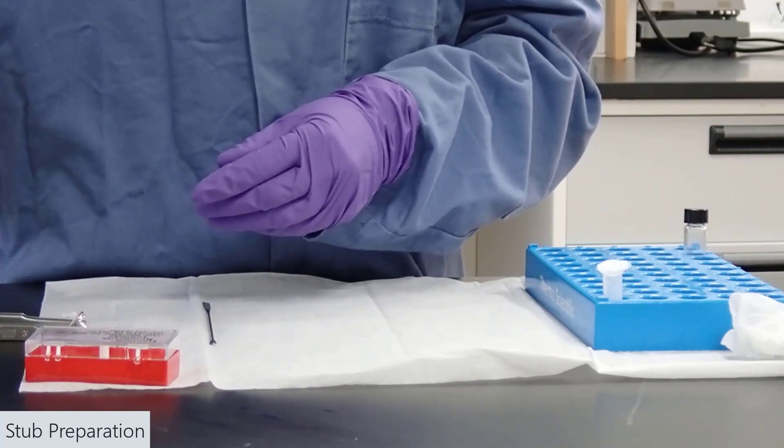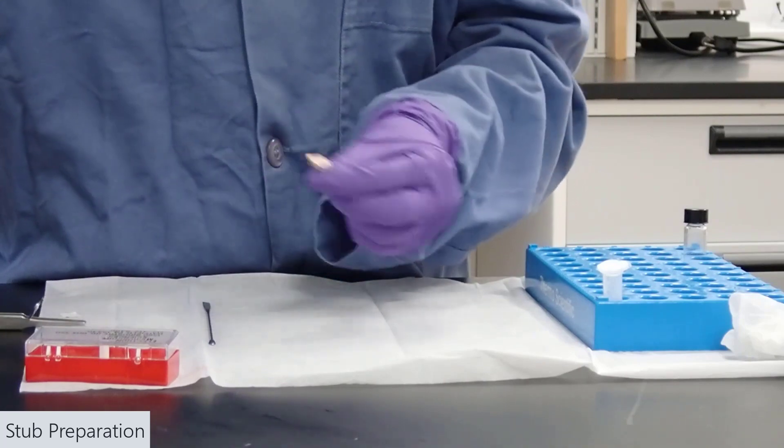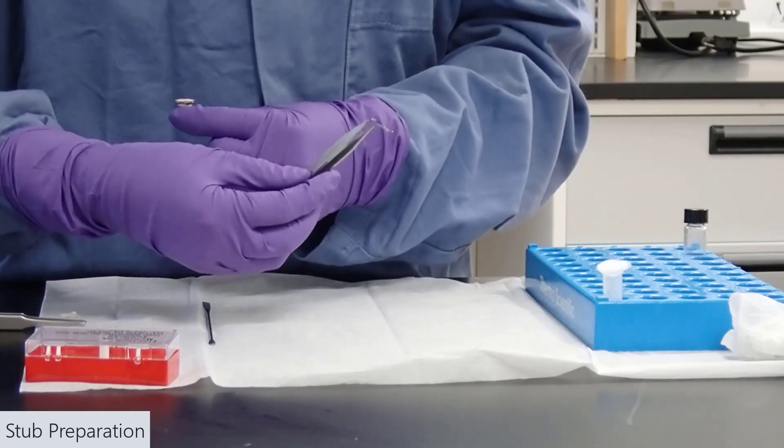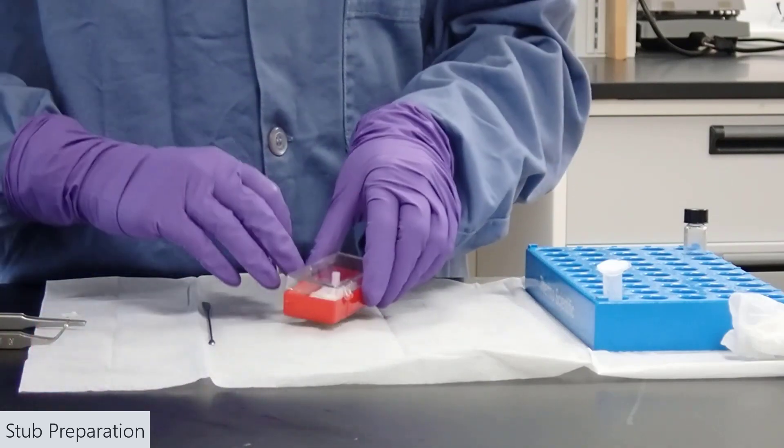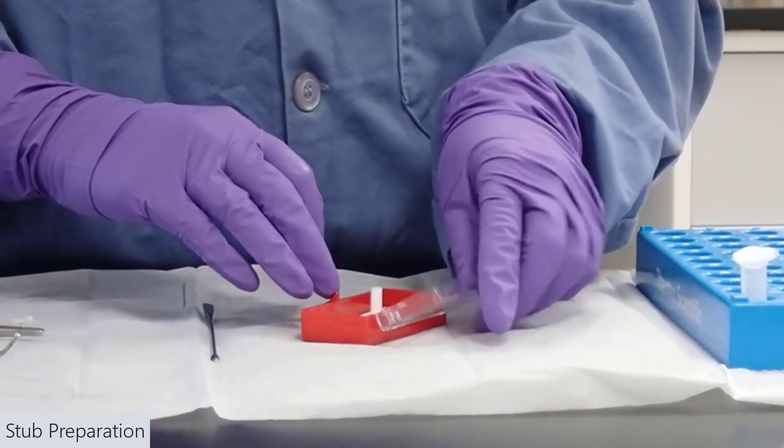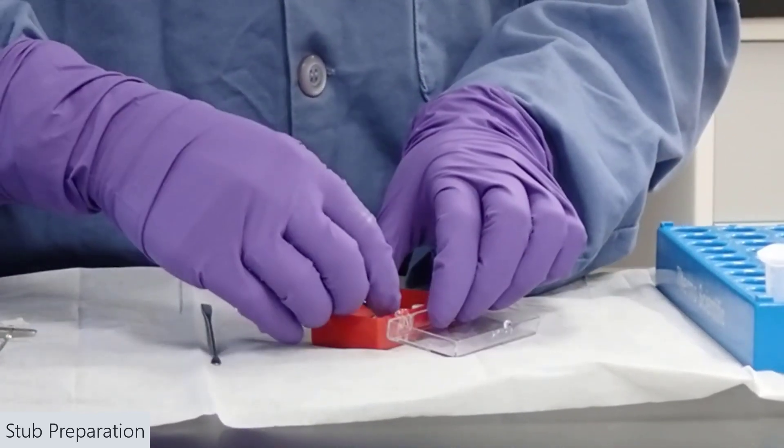Flat tweezers can be helpful. Stub tweezers, an aluminum stub. We'll also need double-sided tape, either copper or carbon.